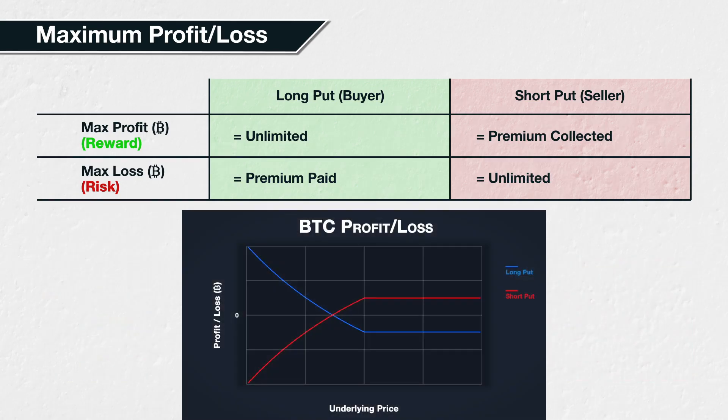For the put option buyer, their profit continues to increase for every dollar decrease in the underlying Bitcoin price. Additionally, every time the Bitcoin price decreases by a dollar, that means that more Bitcoin is needed to pay each one dollar of profit.